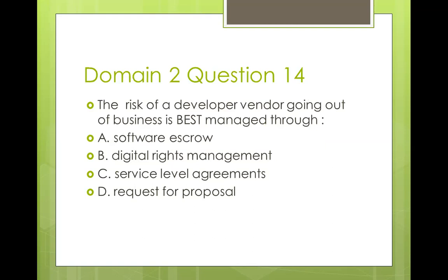Question fourteen: the risk of a developer vendor going out of business is best managed through A) software escrow, B) digital rights management, C) service level agreement, D) request for proposal. Digital rights management addresses copyright issues. An SLA is correct in general, but specifically what addresses a developer going out of business is software escrow — keeping the source code with a third party. A request for proposal is used to invite vendors to respond to requirements. The best answer is A — you can go to the escrow agent to get copies of the source code.